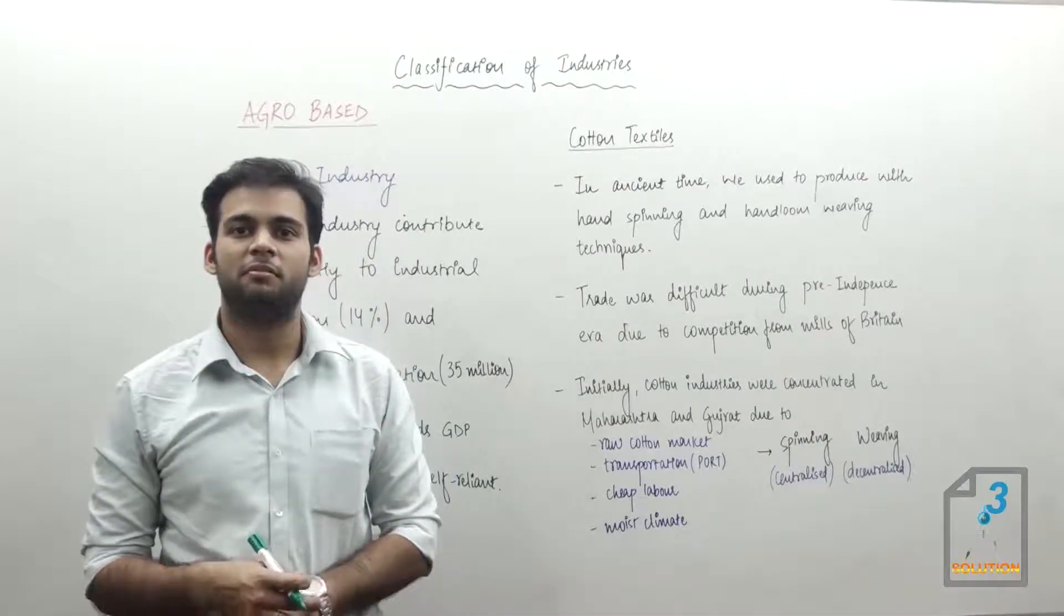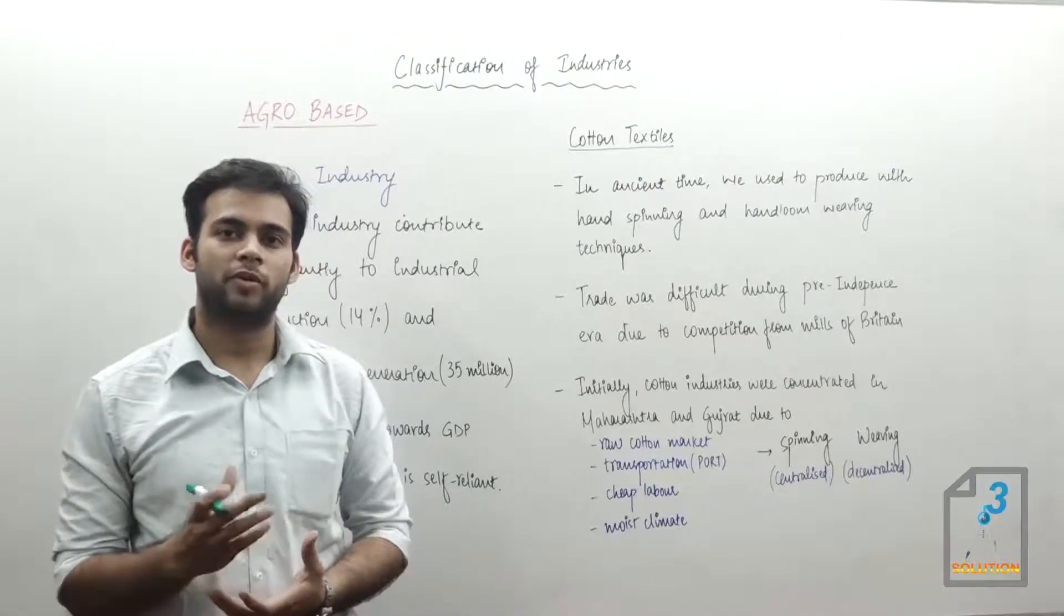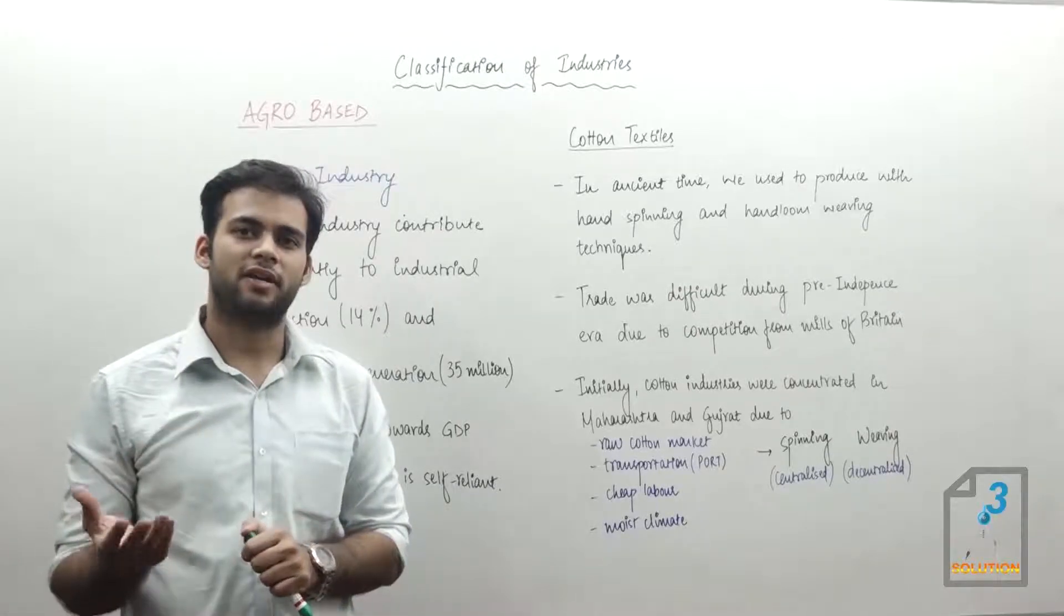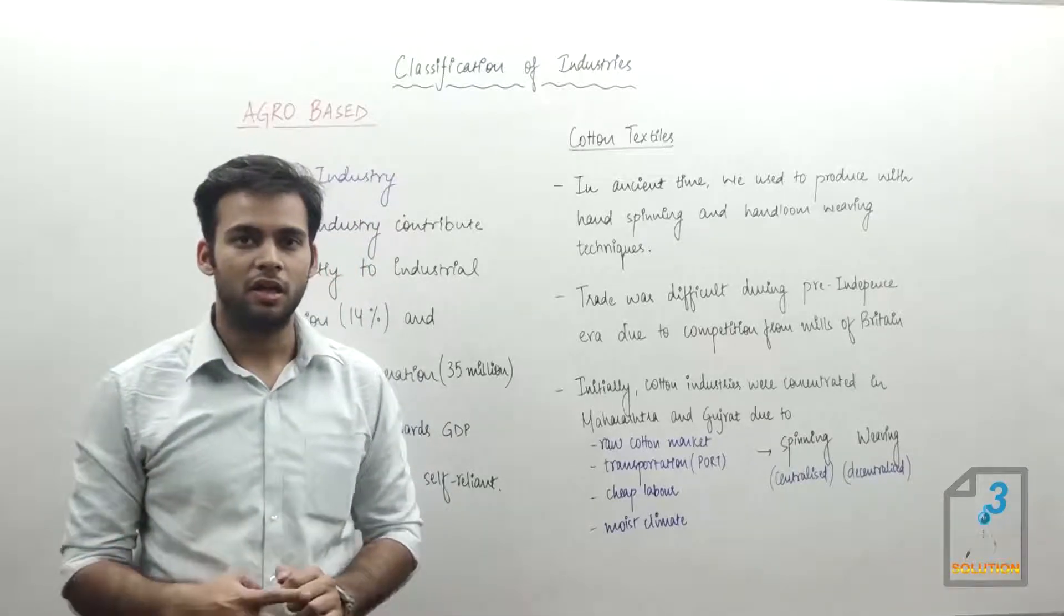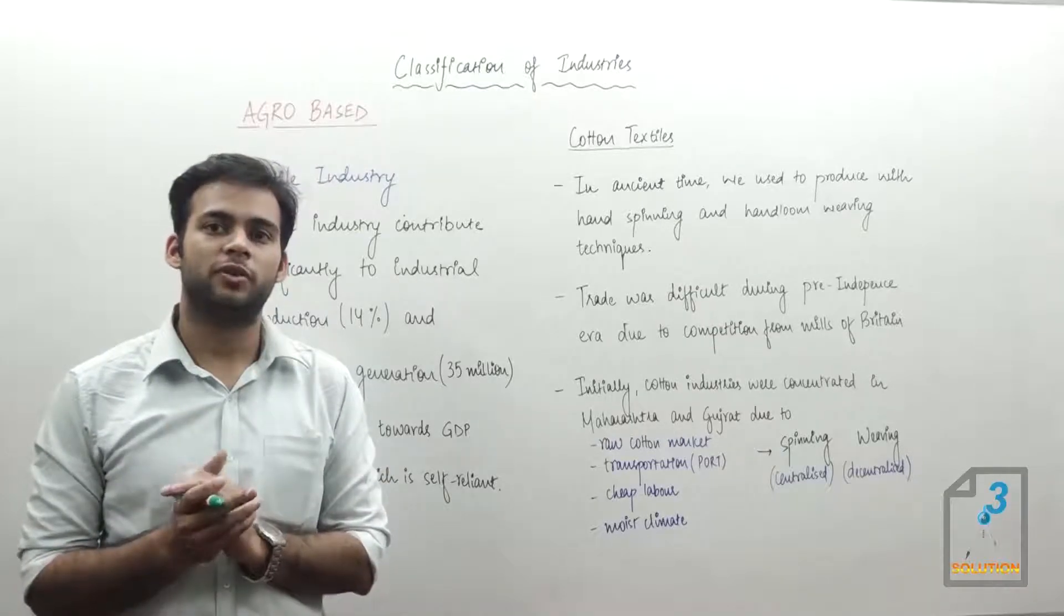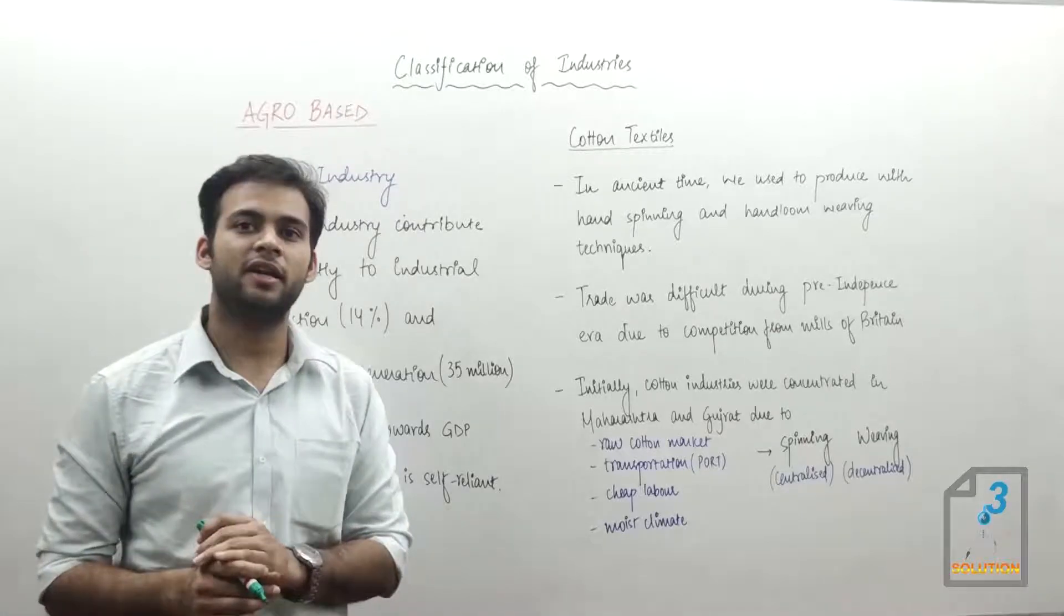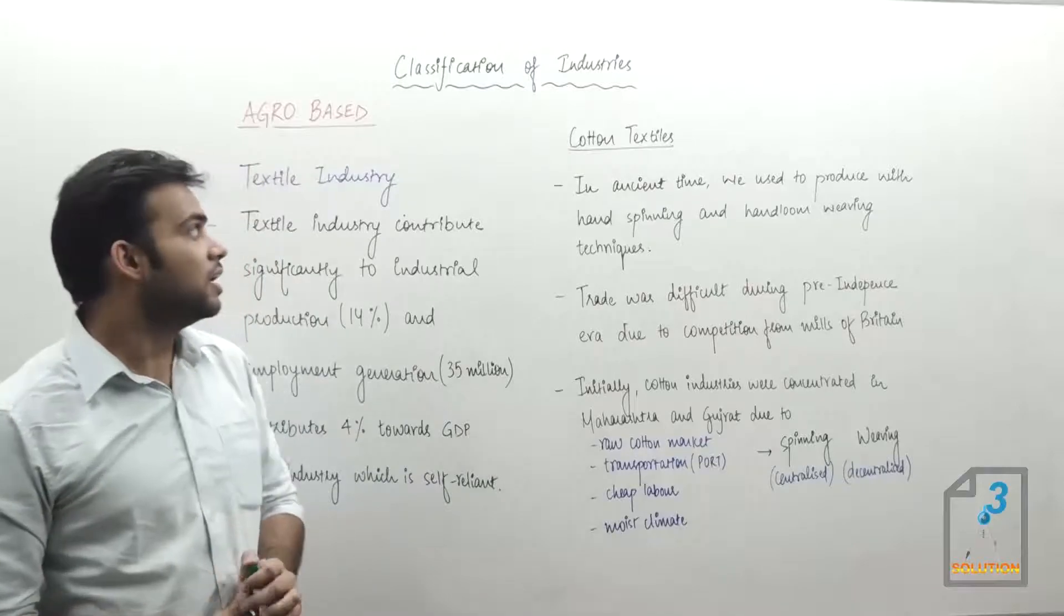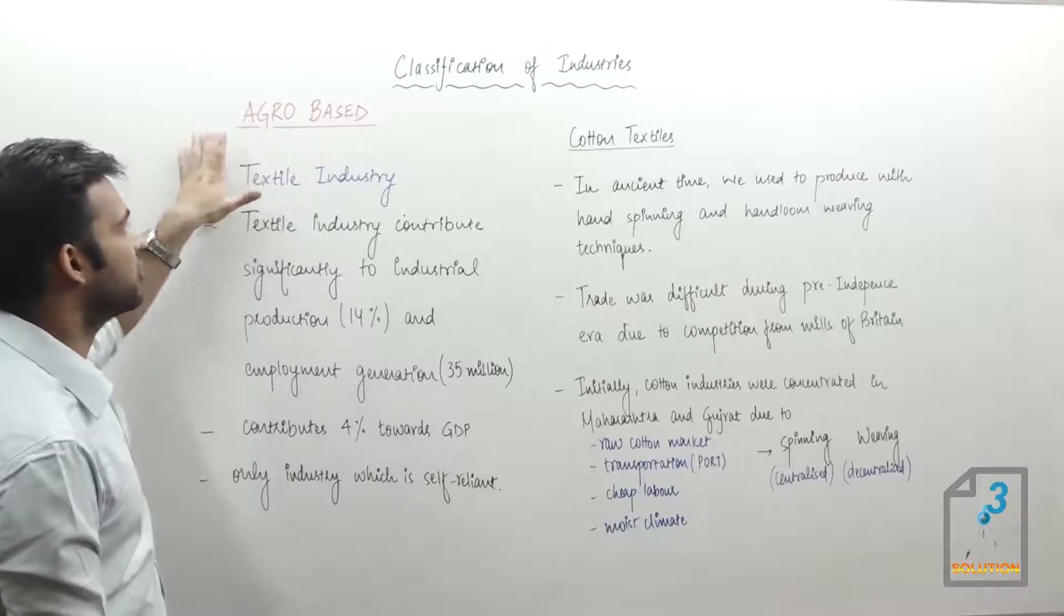Now that we have talked about what manufacturing industries mean and how they provide foreign exchange currency and are important for a nation's development, we discussed which places are suitable for locating an industry and the various factors involved in deciding whether to establish an industry. Now we will classify various kinds of industries. First one is agro-based.